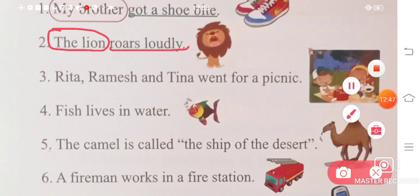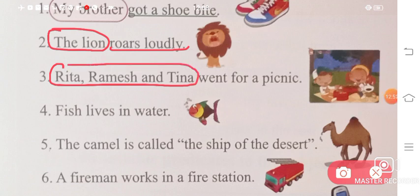'Rita, Ramesh and Tina' - we're talking about three people. These three people will be your subject. And 'went for a picnic' is your predicate. 'Fish lives in water.' Your subject will be fish, and 'lives in water' will be your predicate.